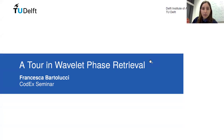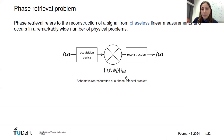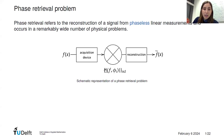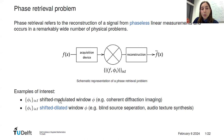Please feel free to interrupt or write in the chat if you have questions. A phase retrieval problem is simply a problem where we try to recover a function f from the magnitude of some linear coefficients. In particular, a special case of interest is when these measurements are in the form of the absolute value of scalar products of f with a family of functions φ_i.